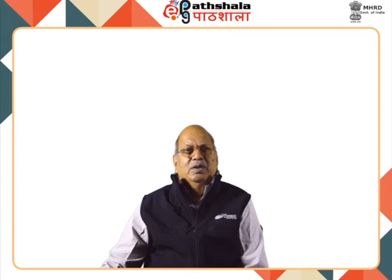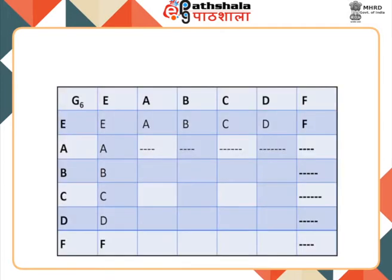An incomplete group multiplication table of a group which has elements E, A, B, C, D, F is shown. We have a row headed by E, A, B, C, D, F and a column headed by E, A, B, C, D, F, with entries to be filled up. This is a group multiplication table of order 6.